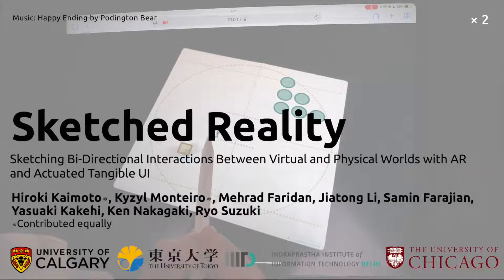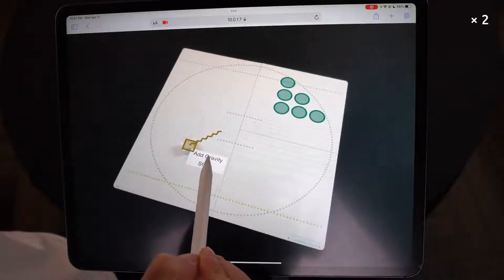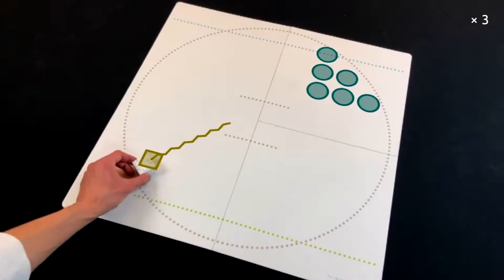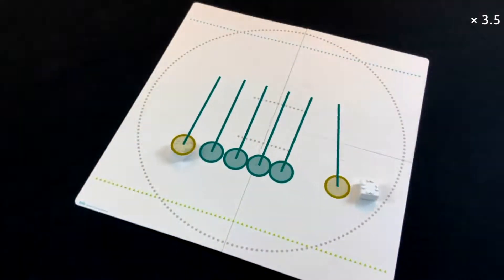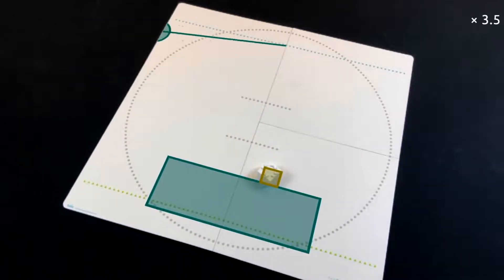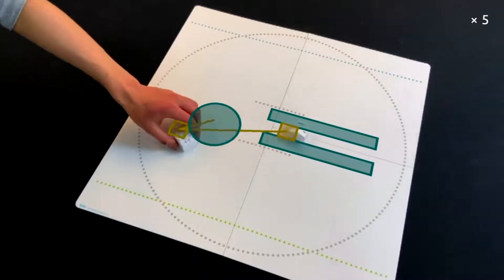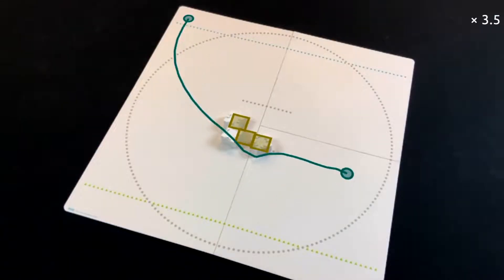This paper introduces sketched reality, an approach that combines augmented reality sketching and actuated tangible user interfaces for bi-directional sketching interactions where virtual sketches and physical objects can affect each other through physical actuation and digital computation.